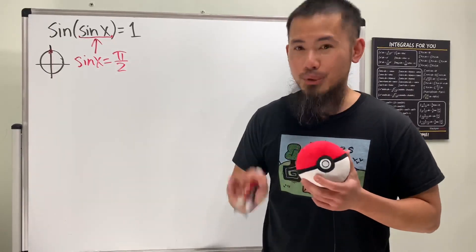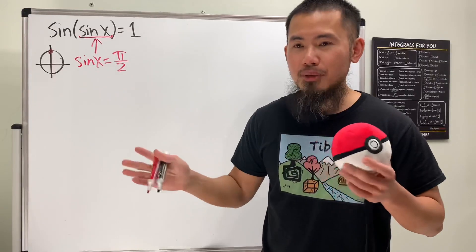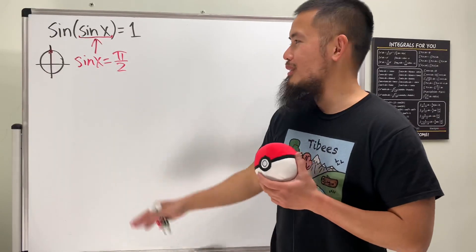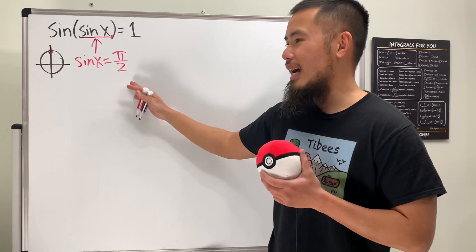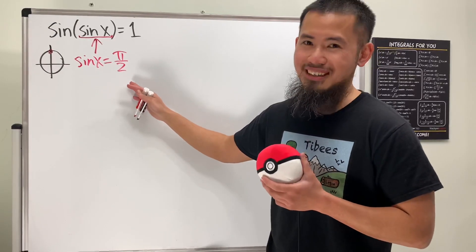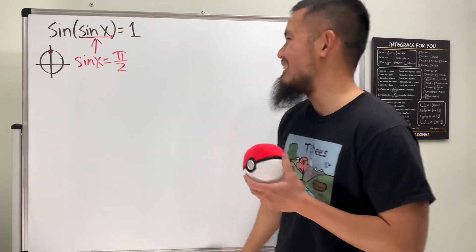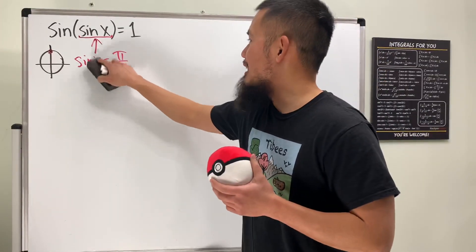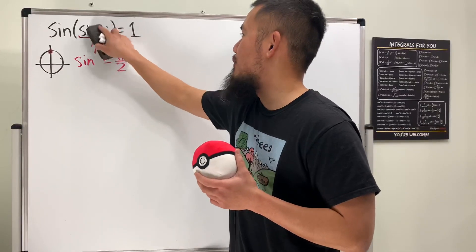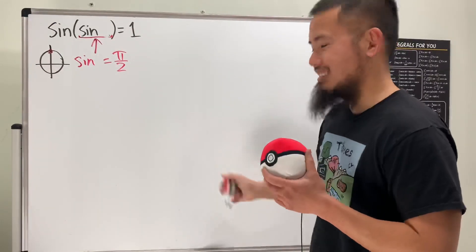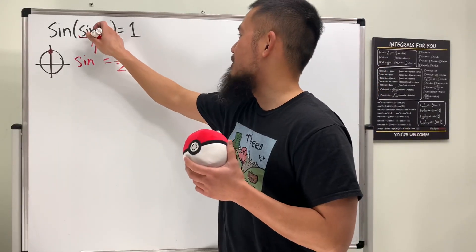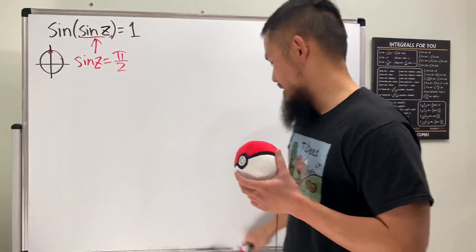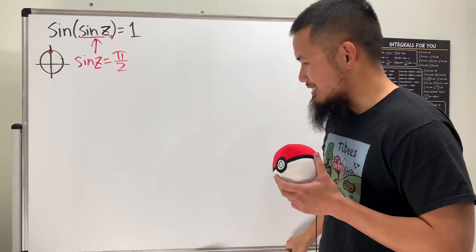I have an equation — sine of z equals two — that I've covered in a previous video, and I just want to look at how much worse this new equation gets. Technically I should use z instead of x, since x is usually reserved for real numbers. So: sine of sine of z equals one.